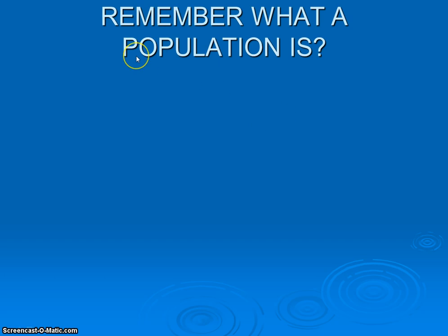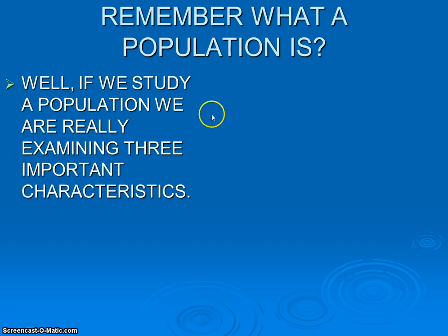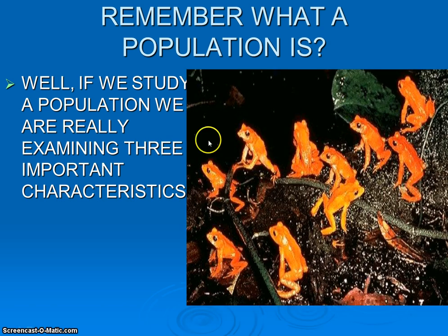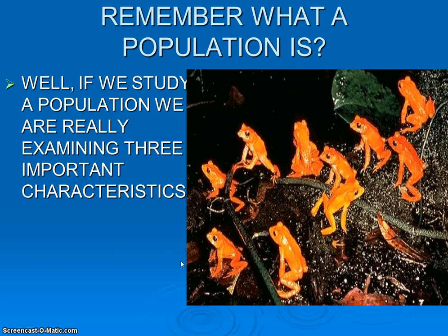We've got to think back to what we said in our first video about what a population actually is. Looking at this example of these strange, very strange-looking poisonous frogs — this would be an example of a population. Remember, a population is a group of individuals of the same species living in a defined area. We couldn't just say tree frogs; we'd have to say whatever species of tree frog is living in the Amazonian rainforest, or even in one tree within that forest.